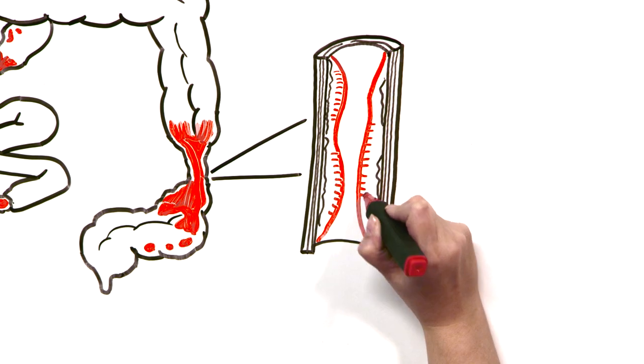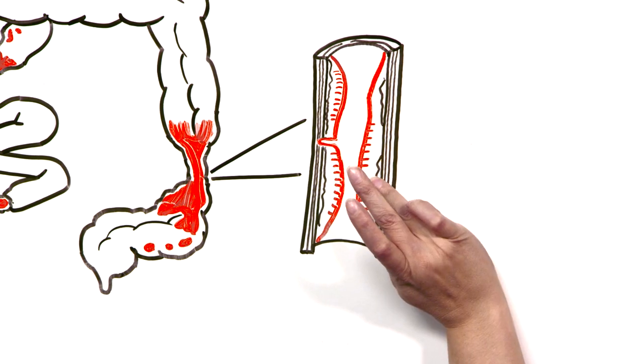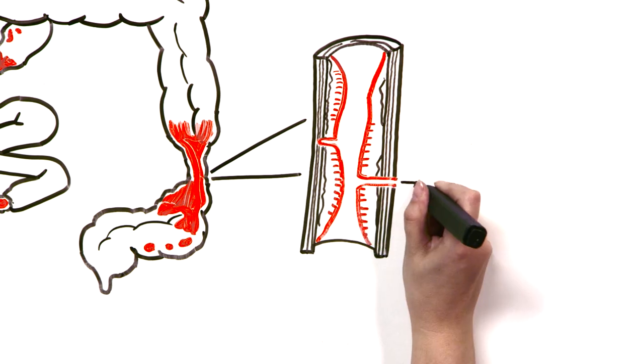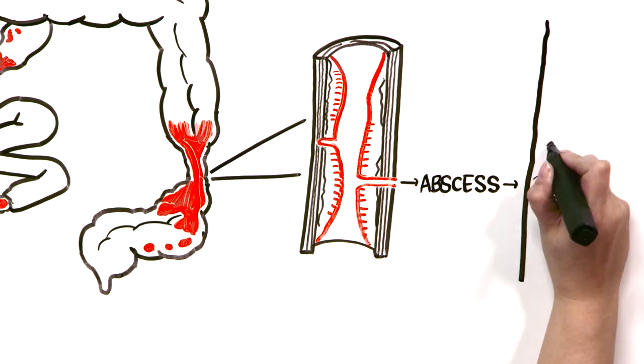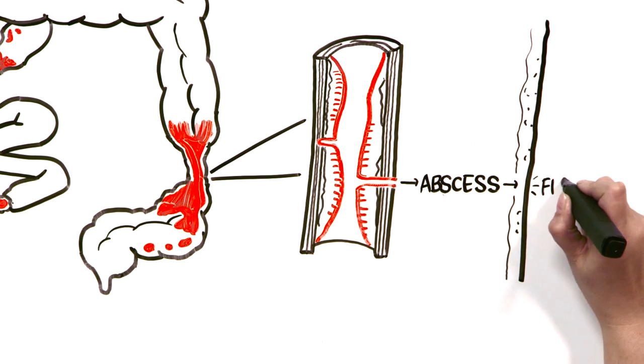In some cases, deep ulcers break through the wall of the intestine, causing infection outside the bowel, what we call an abscess. And this can actually spread to the skin or a nearby part of the body, what we call a fistula.